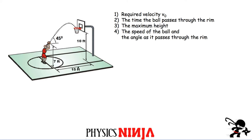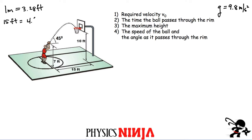We'll work with projectile motion using g = 9.8 m/s², so we need to convert feet to meters using 1 meter ≈ 3.28 feet. The horizontal distance of 15 feet converts to approximately 4.572 meters. I'll call this horizontal displacement L.